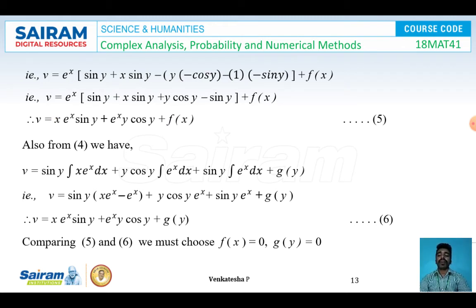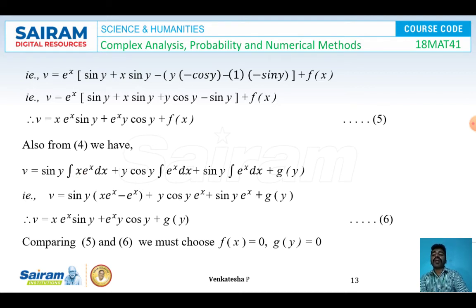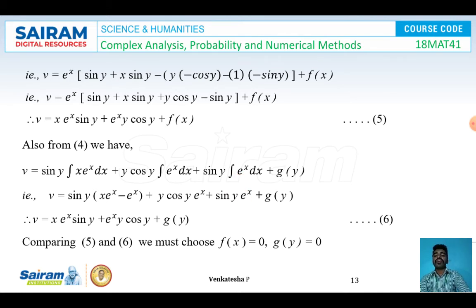Integrating equation 4 with respect to x, treating y constant, and using Bernoulli's rule for ∫x·eˣ dx: v = sin y·(x·eˣ − eˣ) + y·cos y·eˣ + sin y·eˣ + g(y). Simplifying, the sin y·eˣ terms cancel, giving v = x·eˣ·sin y + eˣ·y·cos y + g(y).